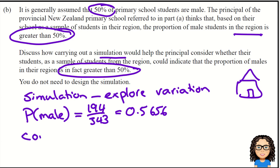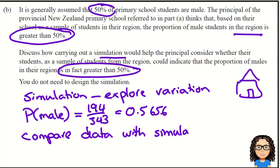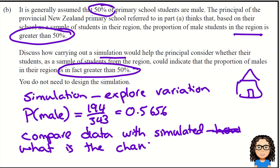So what we want to be able to do is compare the actual data with the simulated data, and see what is the chance that this data is representative. So this single data value of 194 out of 343 — how likely is that, and what's the chance that this is true for the whole region?